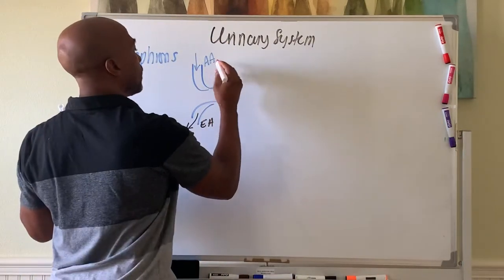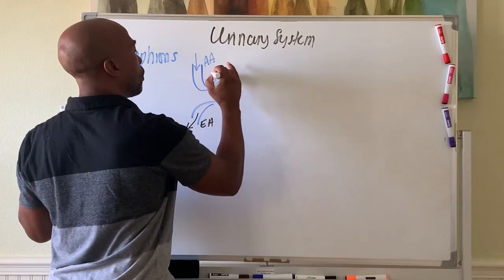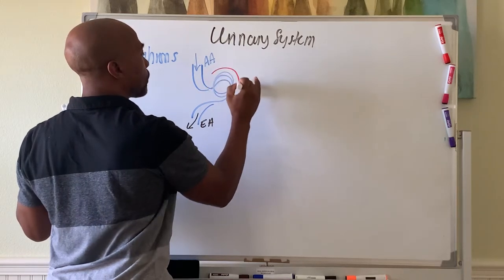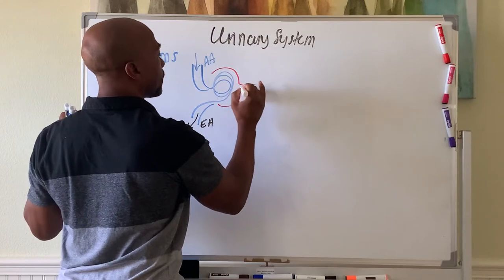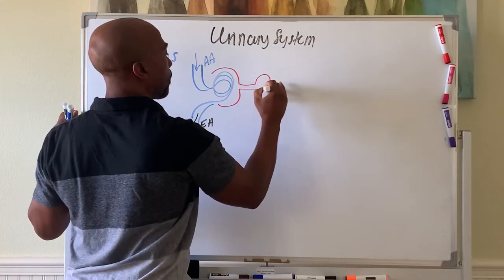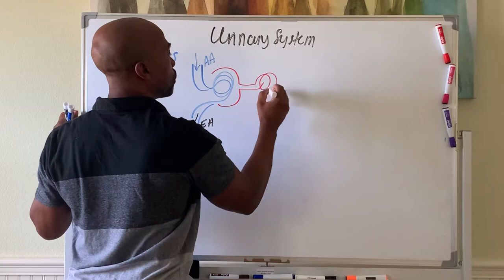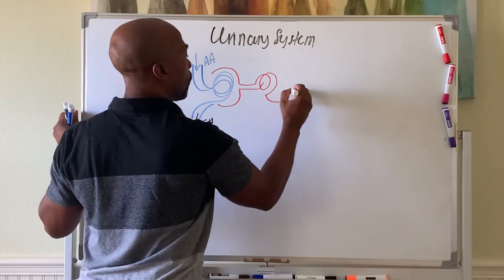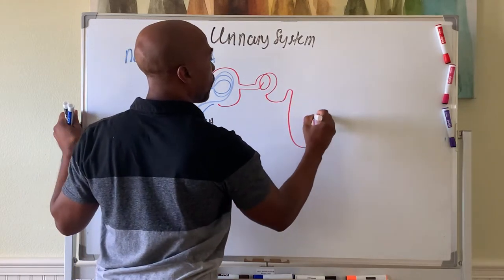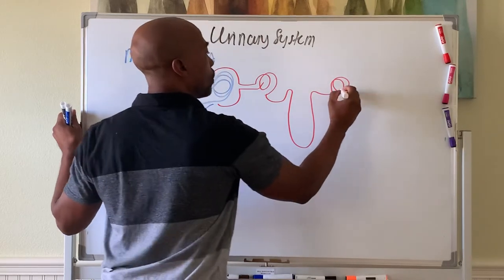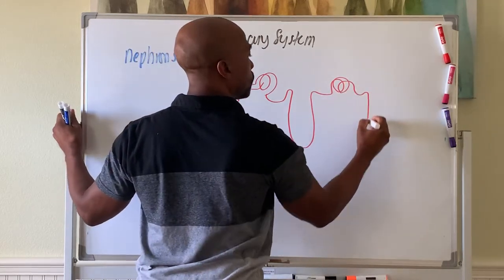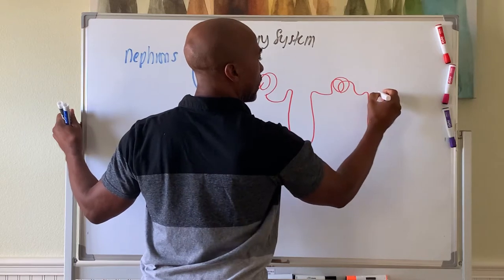And then you have structures of the kidneys called your Bowman's capsule, which flows into what's called a proximal convoluted tubule, which flows into a loop of Henle, into another distal convoluted tubule, which flows into a collecting duct.